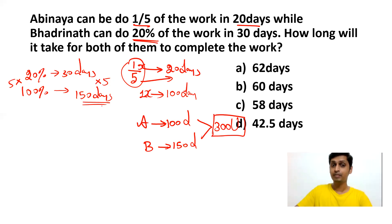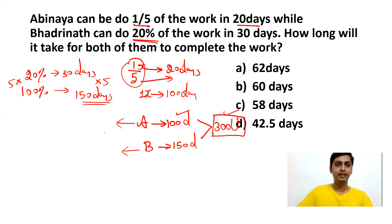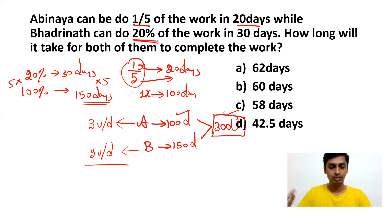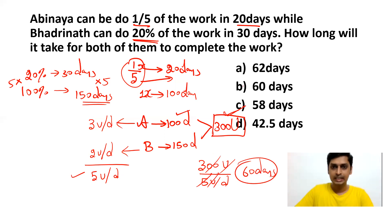The total 300 units will be completed by Abhinaya in 100 days, so in one day she completes 300 ÷ 100 = 3 units per day. Badrinath completes 300 ÷ 150 = 2 units per day. If they work together, they complete 3 + 2 = 5 units per day. Total work is 300 units, so 300 ÷ 5 = 60 days. They will complete the whole job in 60 days if they work together.